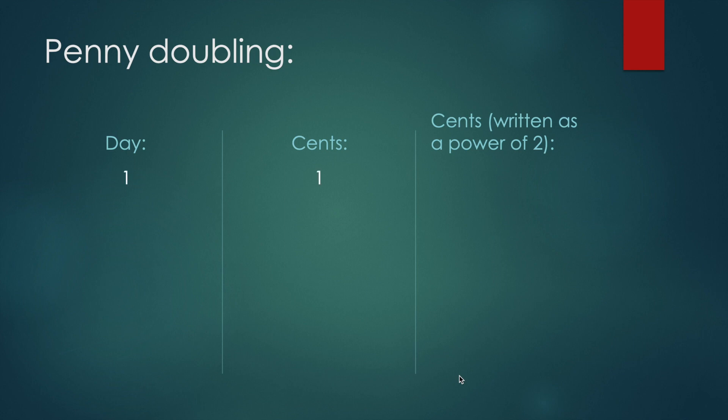So to explore this further, we have day one we make one cent, day two we earn two cents, day three we earn four cents, day four we earn eight cents, day five we earn 16 cents. And ultimately, we want to know how much we earn on day 30.